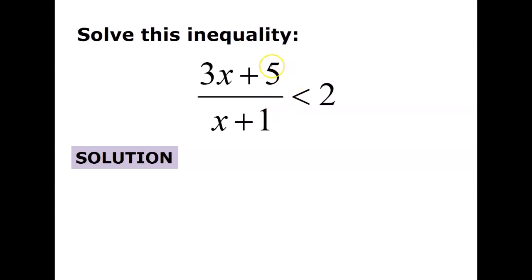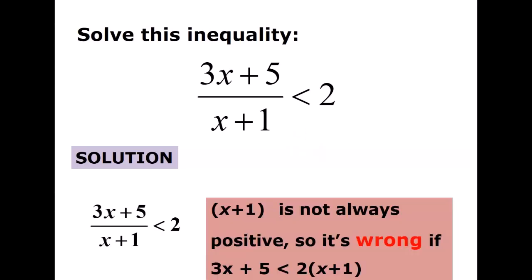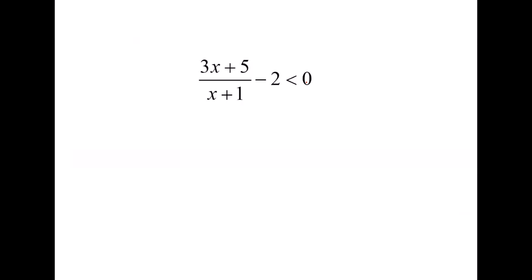For this inequality, we are not allowed to multiply both sides by (x+1) because we are not sure whether (x+1) is positive or negative. This is the warning: x+1 is not always positive, so it is wrong to multiply both sides by (x+1).